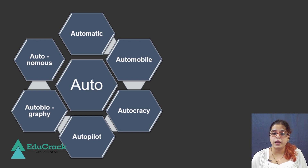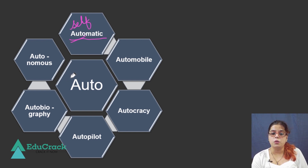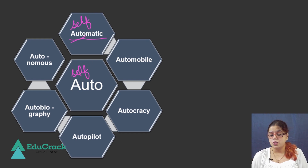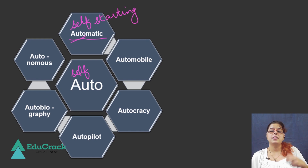The first word that we are looking at is automatic. What do we mean by automatic? Automatic means self-starting. It comes from the root word auto, which means self. So automatic is self-starting. We have automatic washing machines or automatic scooters where they self-start.